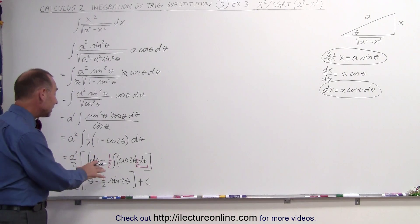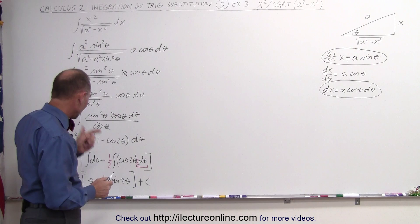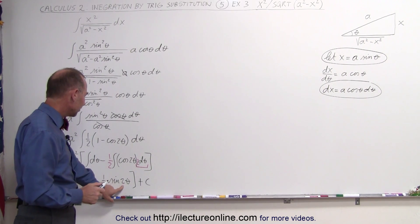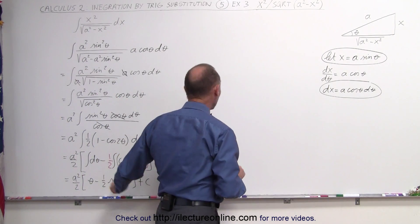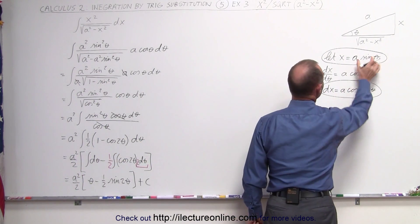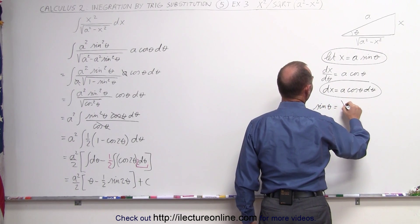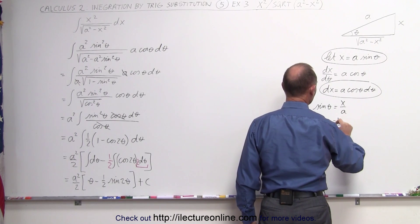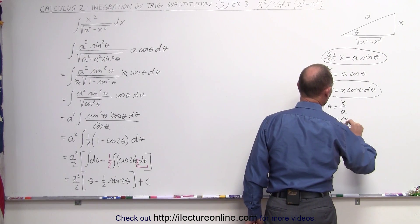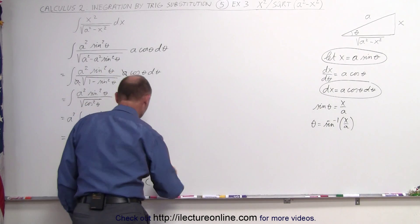I'm not quite done yet, because now I want to reverse everything back in terms of x. I need to express theta and the sine of 2θ in terms of x. Since the sine of theta equals x divided by a, that means theta is equal to the arcsine — the inverse sine — of x over a. I can then replace theta by that quantity.